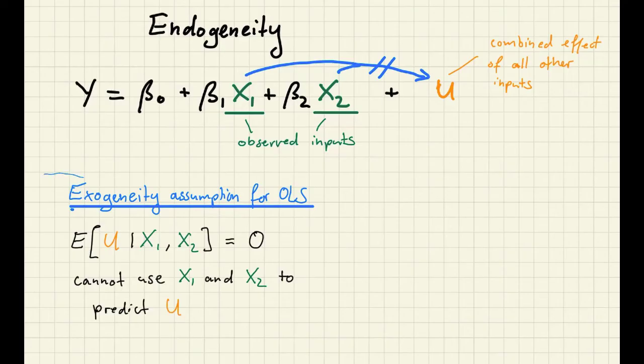If the OLS exogeneity assumption does not hold, then we say that the regressors are endogenous and then we have an endogeneity problem. So that's what endogeneity means.